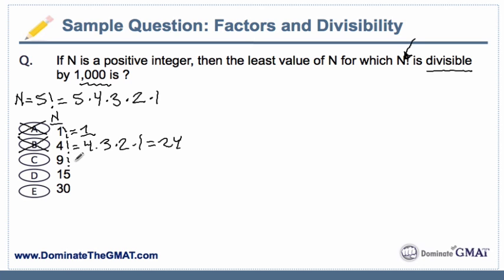Now 9 factorial gets interesting because we have 9 times 8 times 7 times 6 times 5 times 4 times 3 times 2 times 1, and you recognize that this number is going to get very, very large. You don't actually want to do this on your scratch paper — you don't have a calculator and this number is going to get too big. There's a principle at play that we need to figure out. And certainly if you end up testing 15 factorial or 30 factorial, you just won't have enough time on the GMAT to write those out.